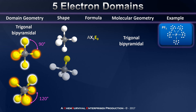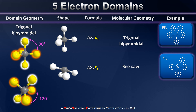Now let's think about an AX4E1 molecule. We have a lone pair, so we have to choose where to put it — axial or equatorial. Placing it in an equatorial position means it's only 90 degrees away from two neighbors, not three, giving it more space. The consequence is that when I remove the appearance but not the influence of that lone pair, I get a compound that looks like a seesaw. An example of a seesaw geometry compound is sulfur tetrafluoride, in which the central sulfur has four bonding domains and one lone pair.